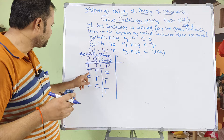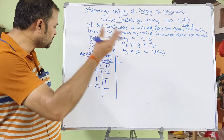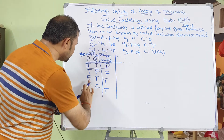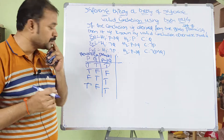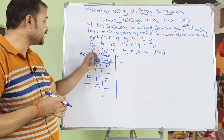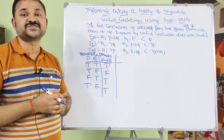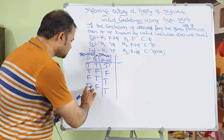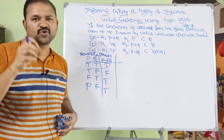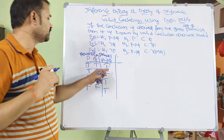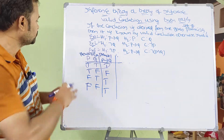Looking at other rows: where P implies Q is false, we do not consider that row. We only focus on rows where all premises produce true values. In the rows where P implies Q is true and P is true, the conclusion is also true. So we can say it is a valid conclusion.